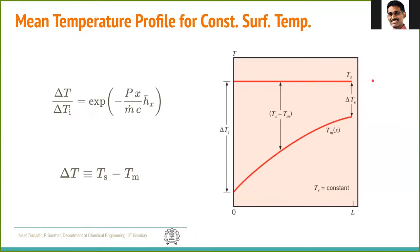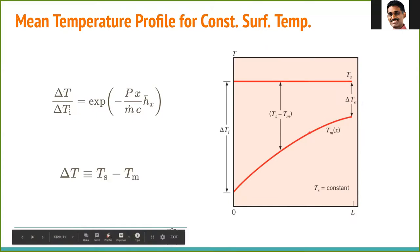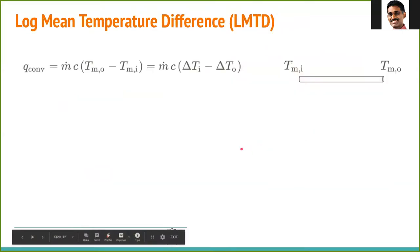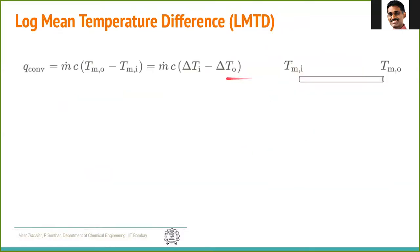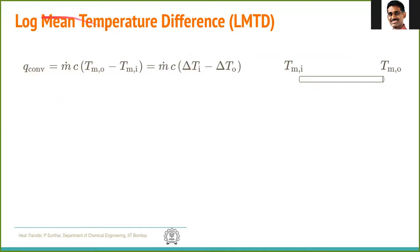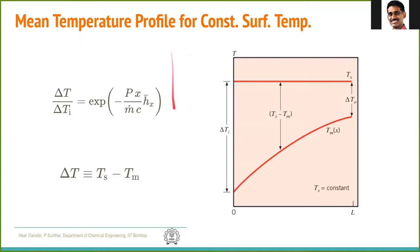Because this is not a linear function, the definition of the heat transfer coefficient has to be treated differently. This is where the concept of LMTD — log mean temperature difference — is used. This is a very common definition used in heat exchangers, and the reason we need it is because of this exponential variation in temperature.